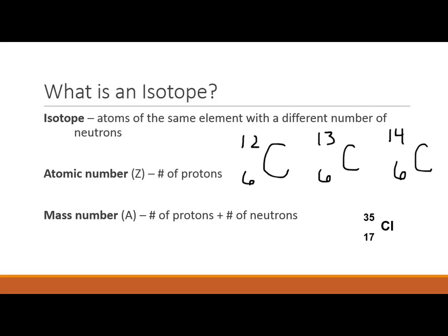Looking at the carbon isotopes, you'll notice they all have a number in common. The bottom number is 6, which is the atomic number, or Z. In German, 'number' is Zoll, which is where the term Z came from. This is the number of protons. All three isotopes of carbon have six protons. If they had a different number of protons, they would no longer be carbon — they'd be a different element.